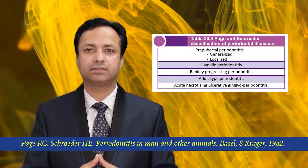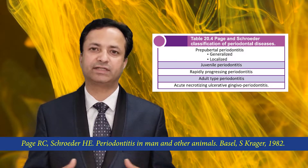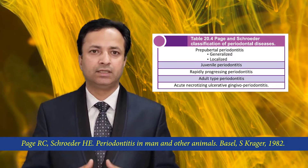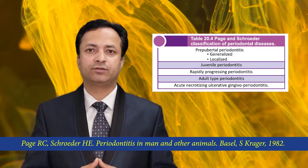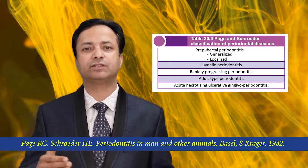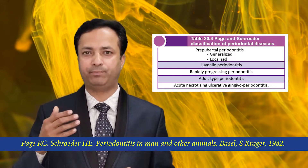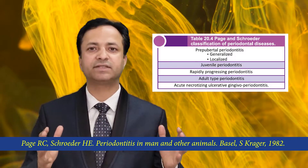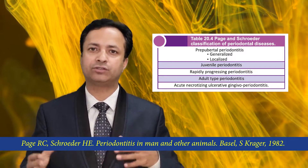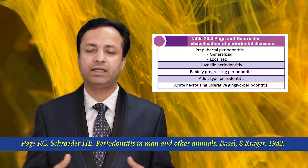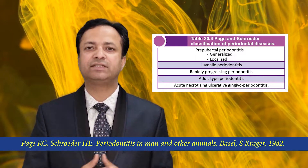Rapidly progressive periodontitis was also associated with peripheral neutrophilic and monocytic defects. The fourth condition was adult type periodontitis, described in patients above 35 years of age. Patients demonstrated periodontal breakdown consistent with the presence of local factors, and the disease could be well treated by non-surgical and surgical periodontal therapy, with patients maintained for a long duration of time.